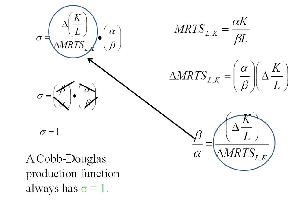A Cobb-Douglas production function always has an elasticity of substitution equal to 1.